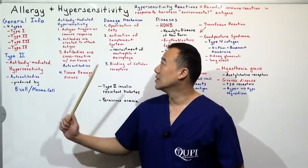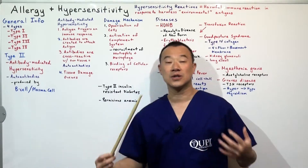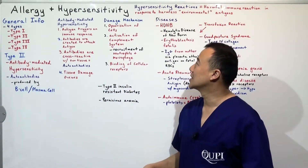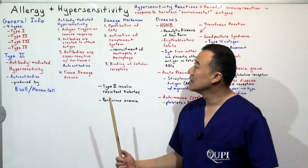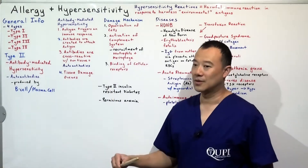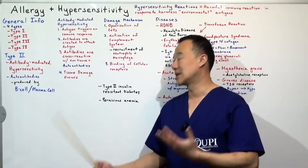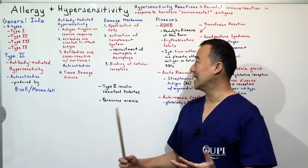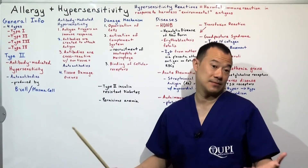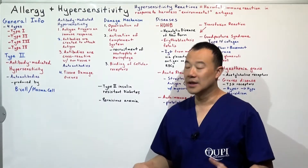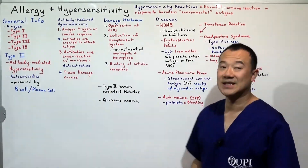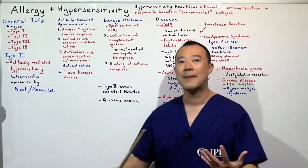That's the difference between type 1 and type 2. So how do auto-antibodies damage your body? The antigens can cause opsonization of the cells, they can activate the complement system — which you will learn in immunology — and in turn recruit neutrophils and macrophages that damage your own cells. They could also bind to cellular receptors, inhibiting function. For example, in diabetes, if they bind to the insulin receptors, then you have insulin-resistant diabetes.